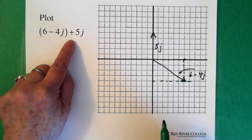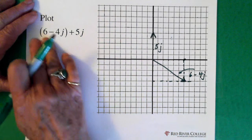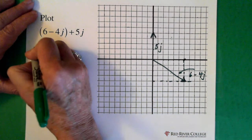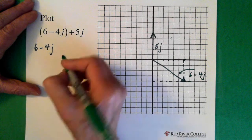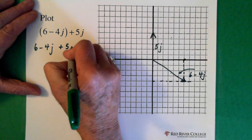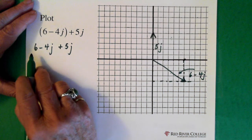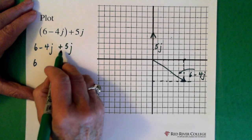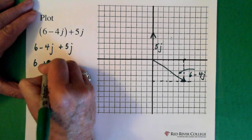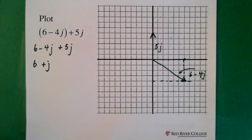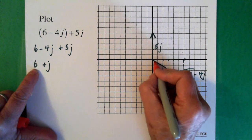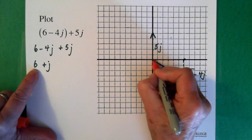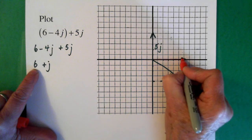Now what we want to do is add those two vectors together. The easiest way to do this is just solve it here. So we have 6 minus 4j — we can see that we can just drop the brackets — and we're adding it to 5j. So the 6 remains a 6. Minus 4j plus 5j gives us plus j.